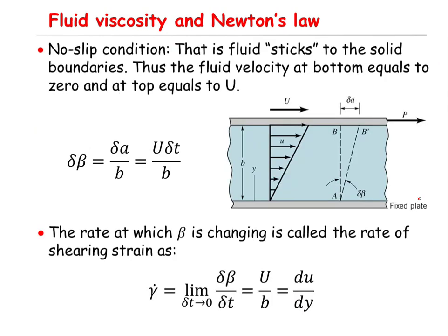The no-slip boundary condition basically means the fluid sticks to the solid boundaries. So the fluid at point A has velocity zero because this plate is fixed, and the fluid located at point B moves with velocity U, moving from point B to point B'.